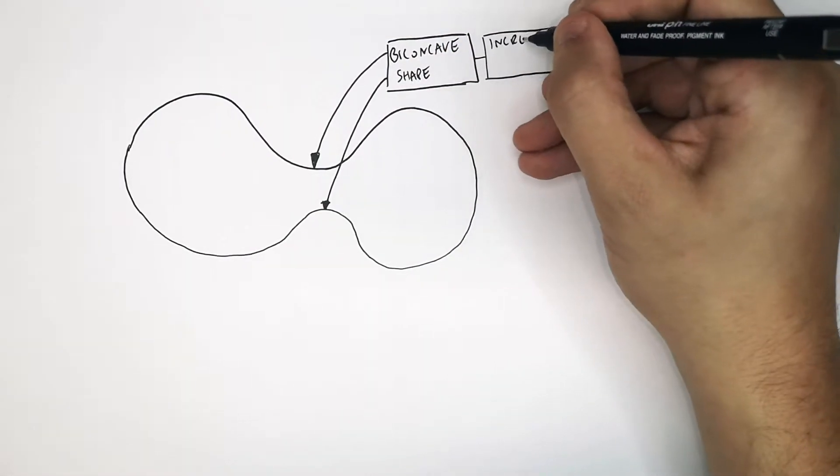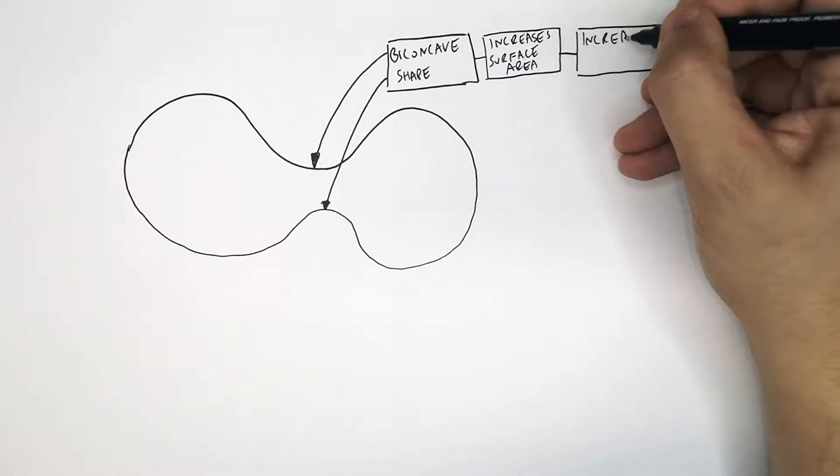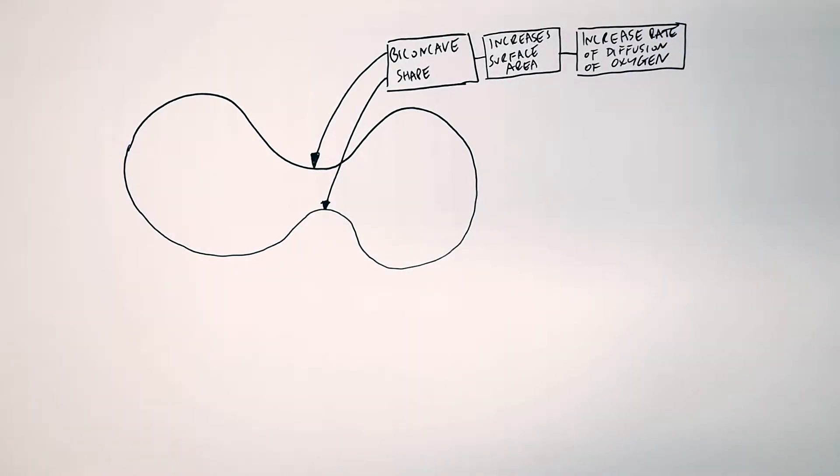This biconcave shape increases the surface area of the red blood cell, which increases the rate of diffusion of oxygen into and out of the cell.